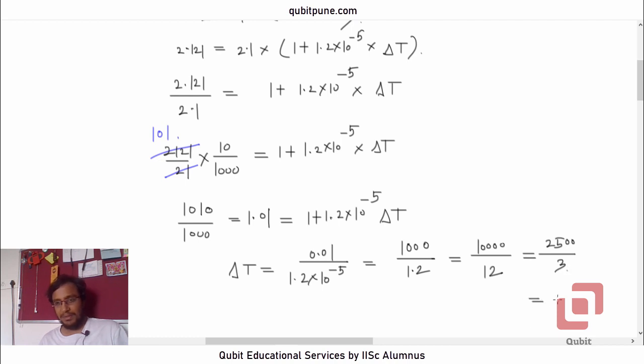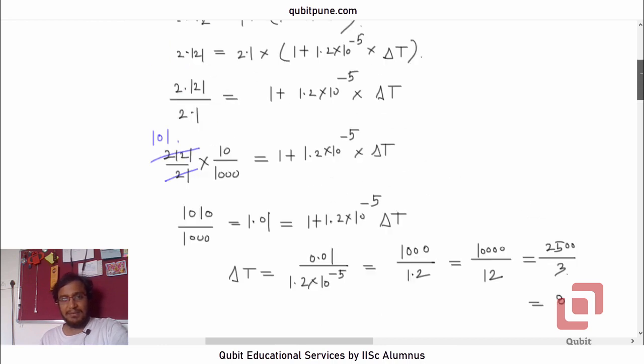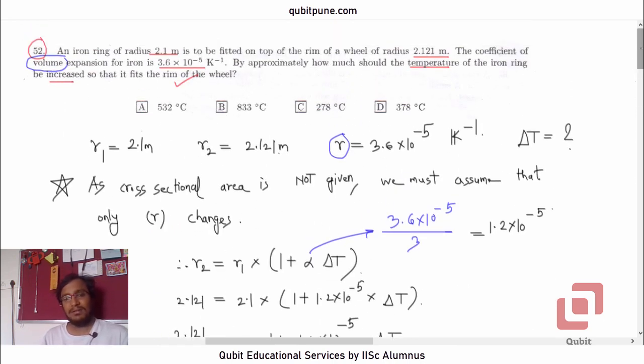Yes. And how much is that? 800 something. So this is delta t. It does not really matter whether it is in Kelvin or in Celsius. So option is B. Correct option is B.